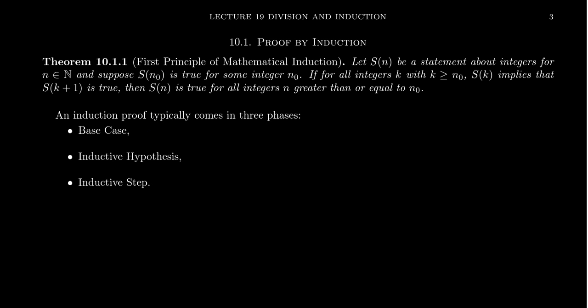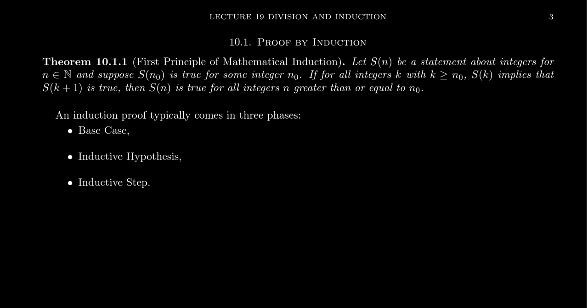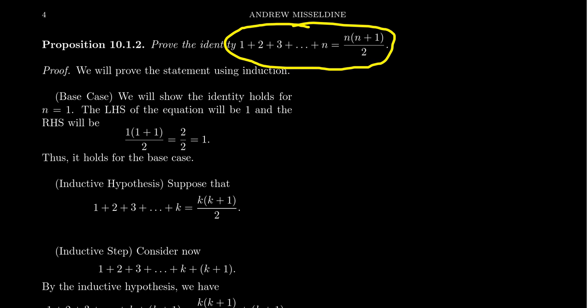Let's now show some examples. Perhaps the classic example is: prove the identity 1 + 2 + 3 + 4 + 5 + ... + n = n(n+1)/2. This is actually an identity we've already seen before — we proved it using a combinatorial proof. It will be interesting to compare this technique versus the combinatorial proof: it's a very different technique that still proves the statement true, but in a very different way.